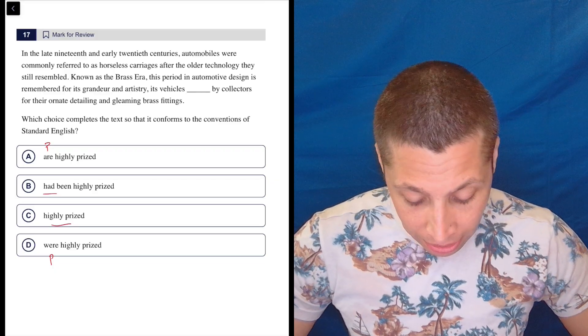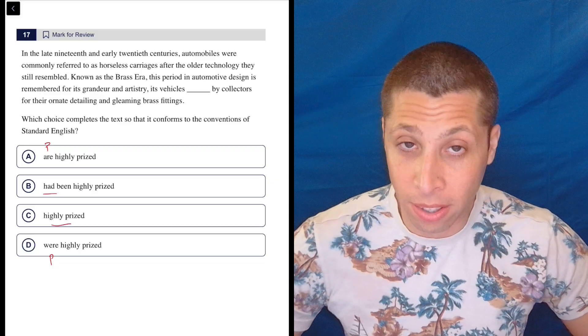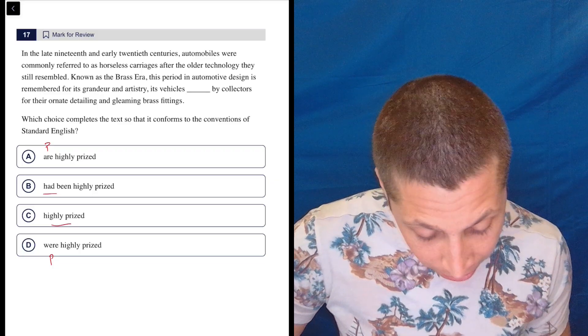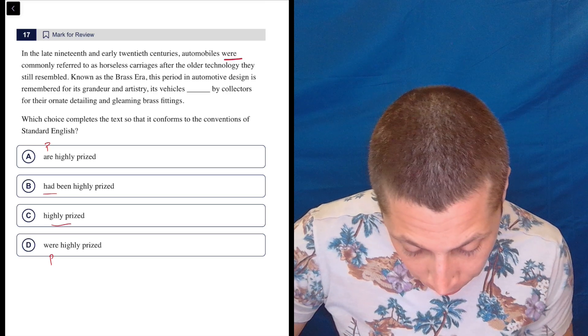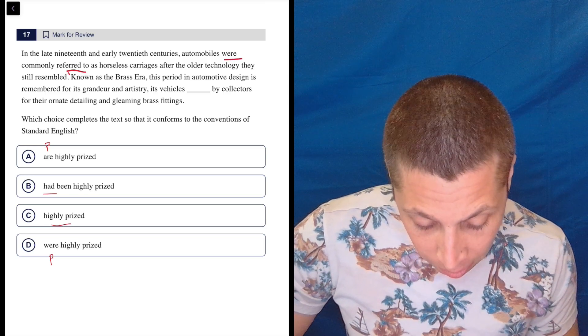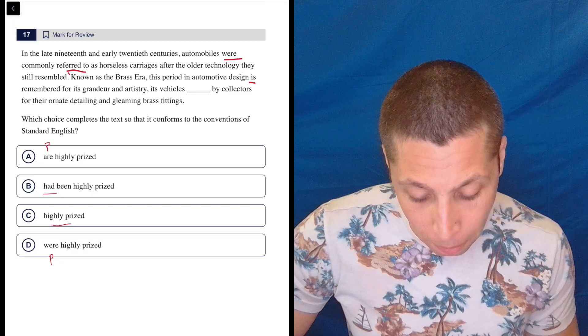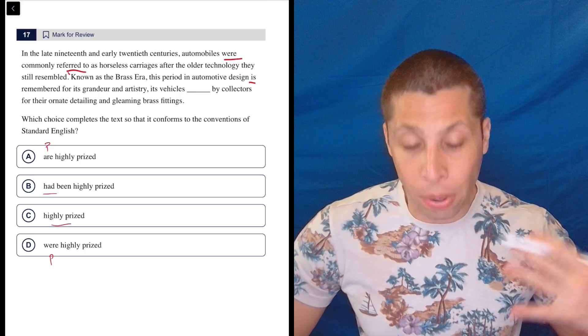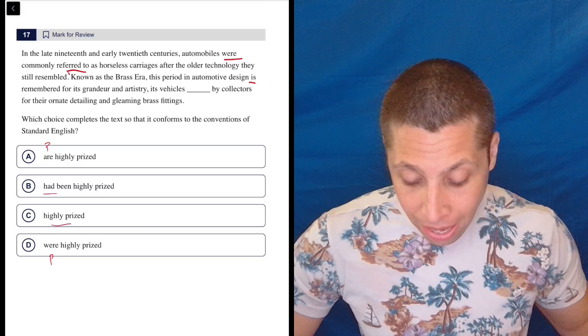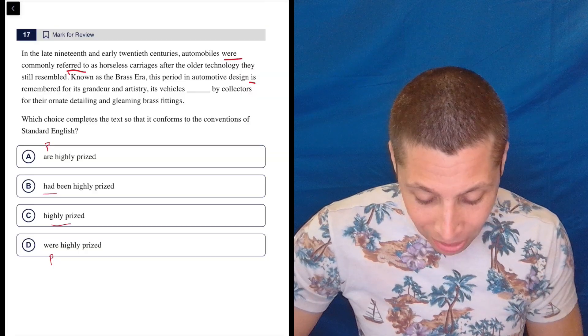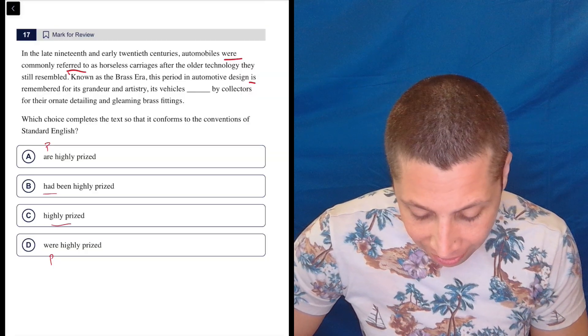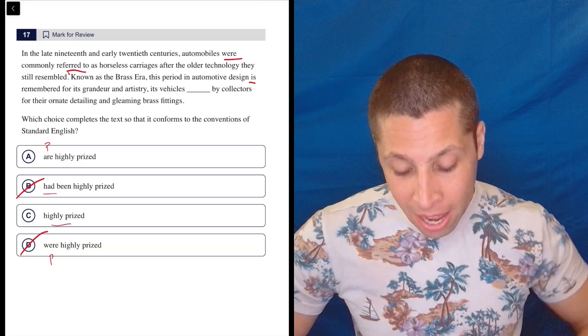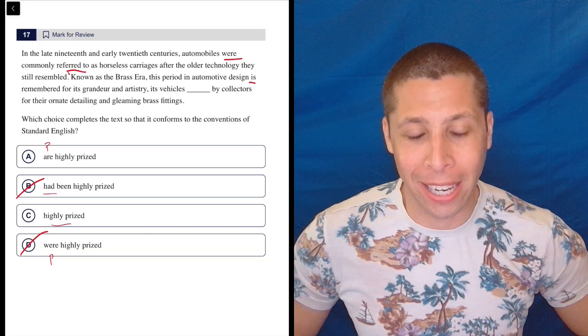That's really sneaky. So first of all, they want us to think this is the past tense, right? They're talking about in the late 19th and early 20th centuries. We have a lot of past tense verbs: were, referred, right? This period, now we switch, 'is remembered' for its grandeur and artistry. And so now we've moved into the present, right? Collectors today are collecting these cars. So it's not the past tense. It's not that they had been highly prized by collectors or were highly prized by collectors. They are highly prized by collectors.